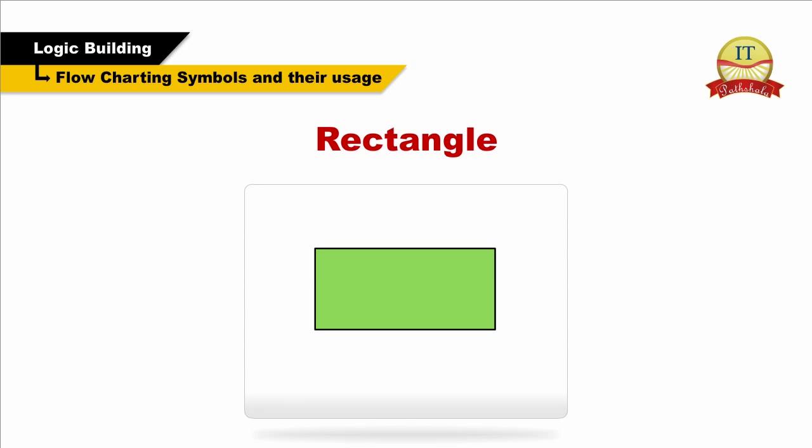Rectangle. In most flow charts, the rectangle is the most common shape. It is used to show a process, task, action, or operation. It shows something that has to be done or an action that has to be taken.